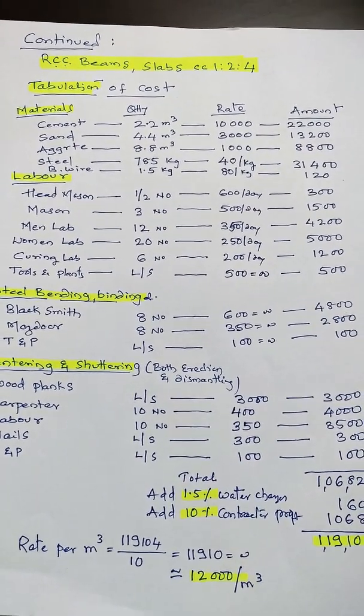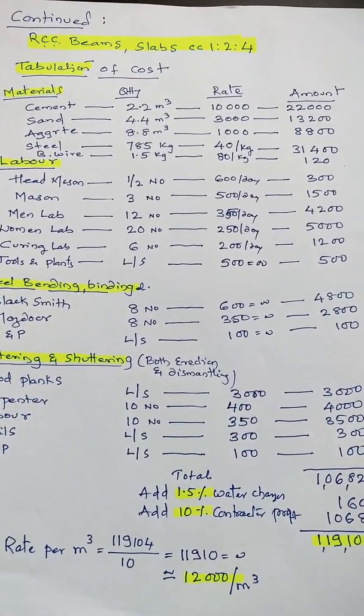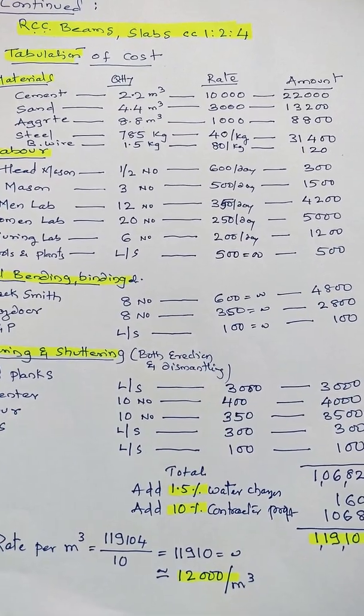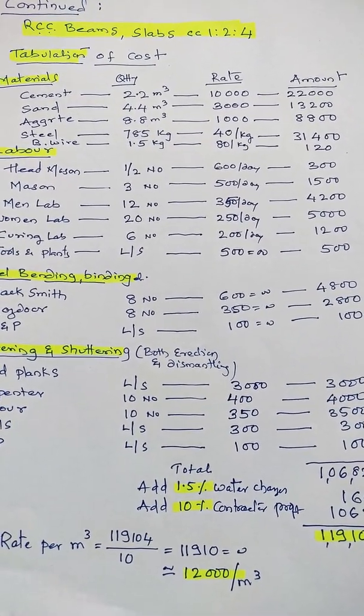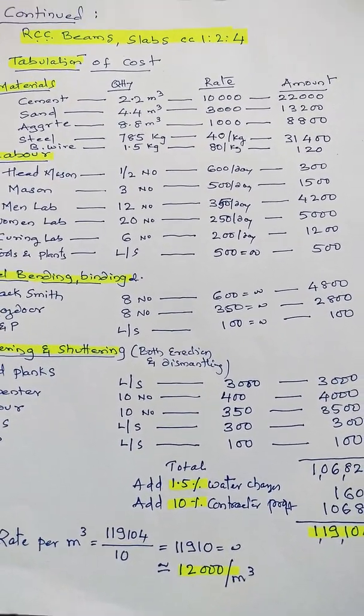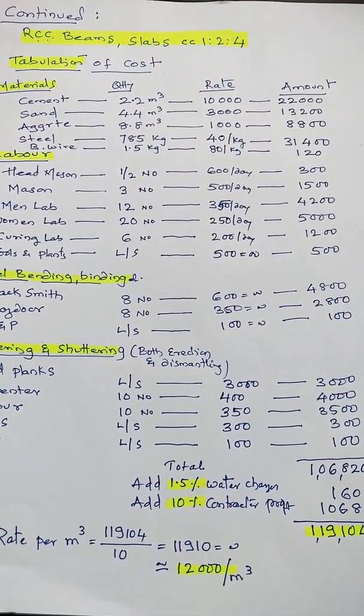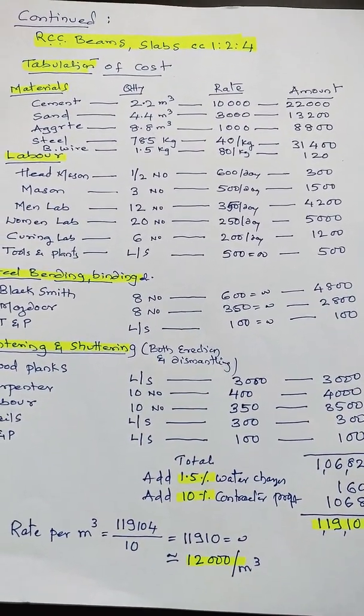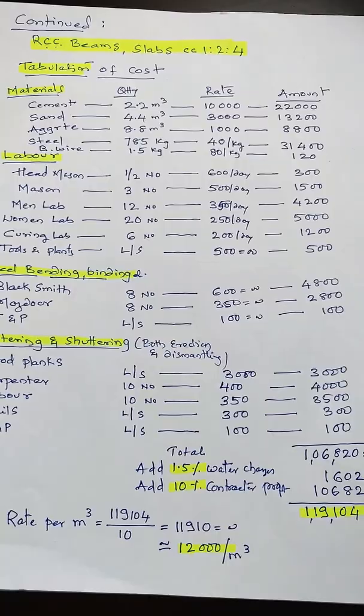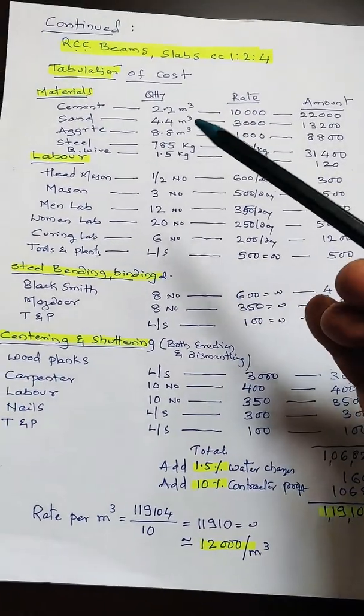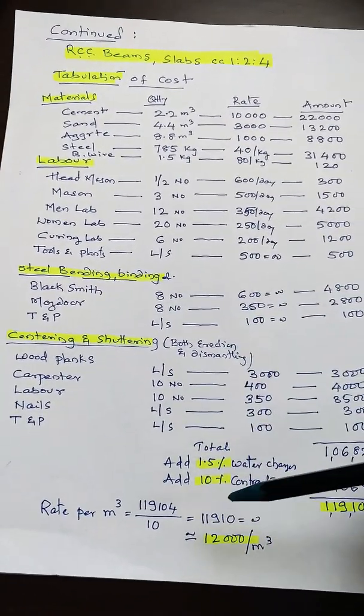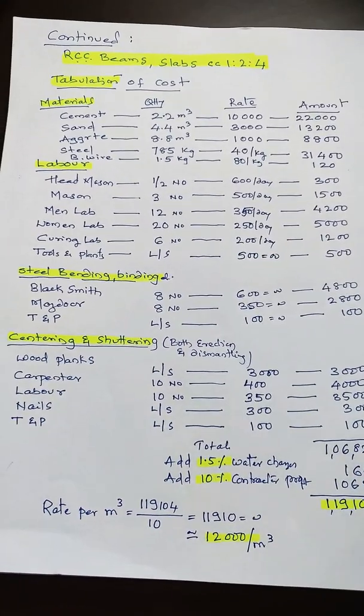Similarly, you can calculate for 1:1.5:3 or 1:1:2 ratios. At that time, only the material calculation changes. These other items remain almost the same. For columns we take those different percentages mentioned earlier. Thank you.